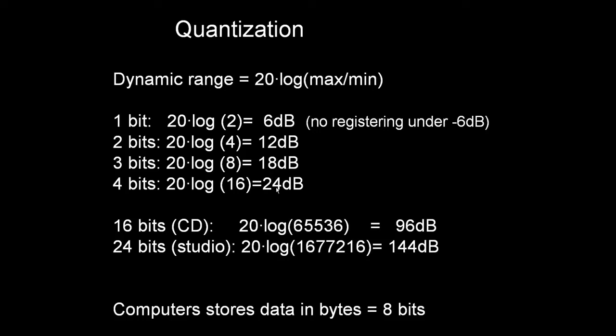CD standard uses 16 bits, and this is 96 dB of dynamic range. In studio recording, we use 24 bits, and this is 144 dB. In studio recording, room noise may be under minus 96 dB, but is always over minus 144 dB. In computers, data is stored in bytes, which is a group of 8 bits. So if you want better quality than 16 bits, you must go up to 24 bits.